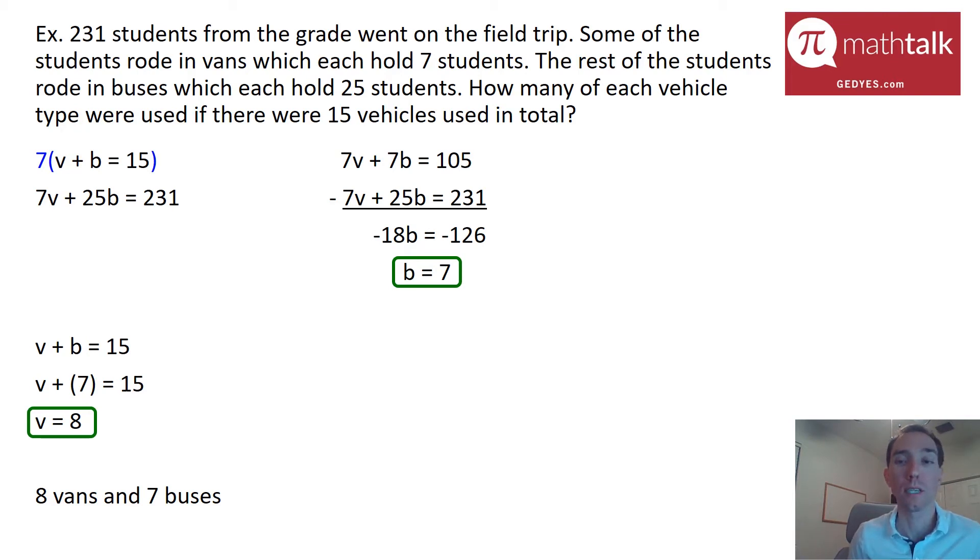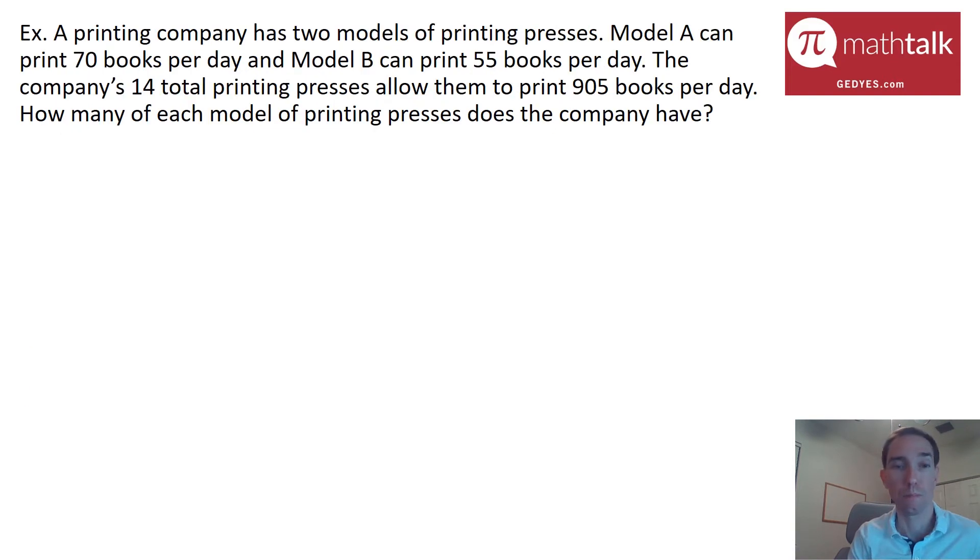All right, good. Let's look at one more example. This one says a printing company has two models of printing presses. Model A can print 70 books per day. Model B can print 55 books per day. The company's 14 total printing presses allow them to print 905 books per day. How many of each model of printing presses does the company have? So this is very similar to the last problem, just a different kind of scenario. We're looking at printing presses and books instead of students and vehicles.